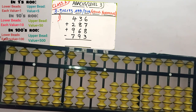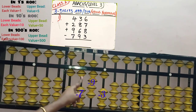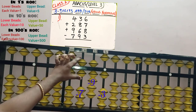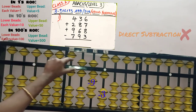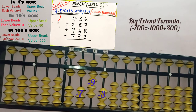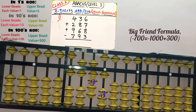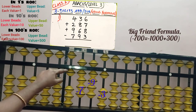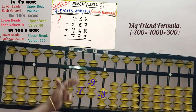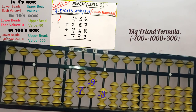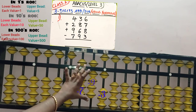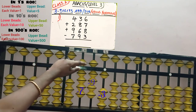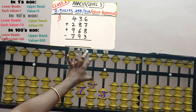Next, last row: minus 793. Minus means we have to remove bits from the answer. Remove 3 bits from the 1s slot, 9 bits from the 10s slot, and 7 bits from the 100s slot. First, remove 7 from the 100s slot — only 6 bits available, cannot remove directly. Big friend: 7's big friend is 3, but since it's minus 7, we add 3 here and remove the boss in the next slot — minus 1000 plus 300. Then remove 9 from the 10s slot directly — 90 is removed.